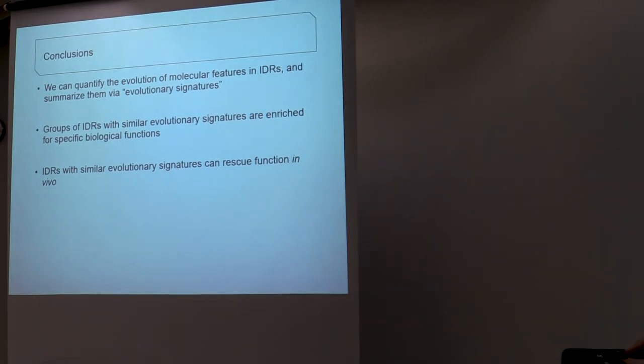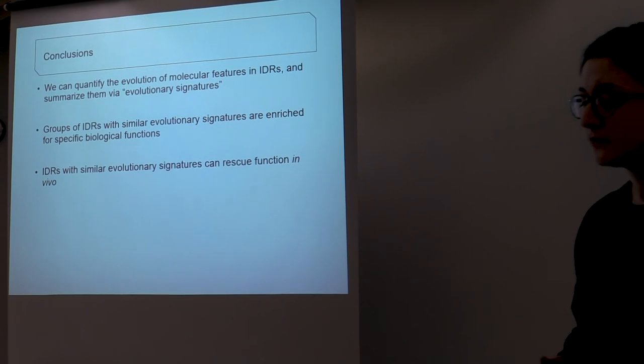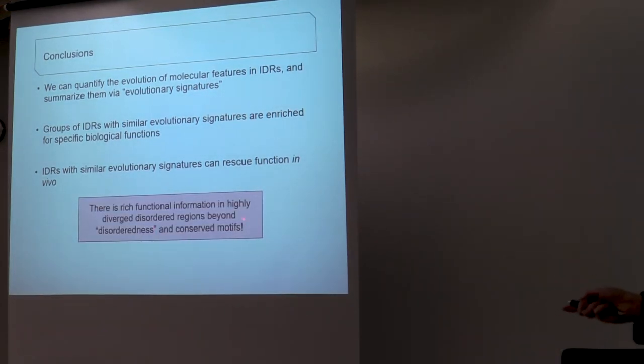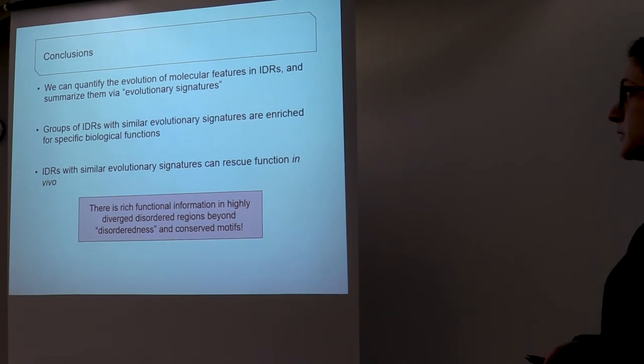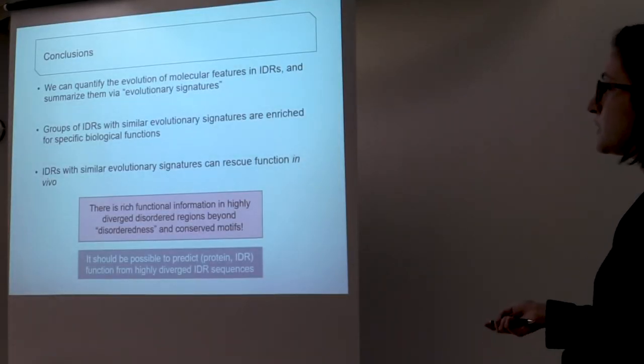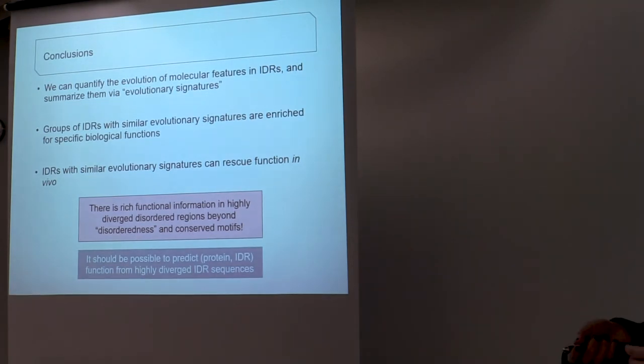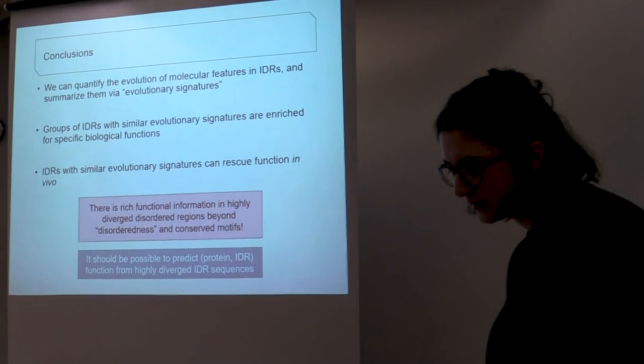So in conclusion, we can quantify the evolution of molecular features in IDRs and summarize them via evolutionary signatures. Groups of IDRs with similar evolutionary signatures are enriched for biological functions, and IDRs with similar evolutionary signatures can rescue function in vivo. And so the TLDR version is there's rich functional information in these highly diverged disordered regions, beyond them just being disordered and beyond their conserved motifs. And so we think it should be possible to predict protein and IDR function from these highly diverged IDR sequences.